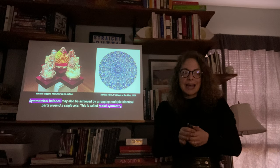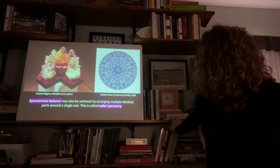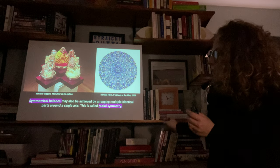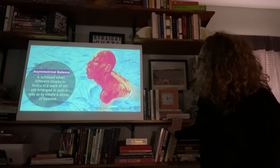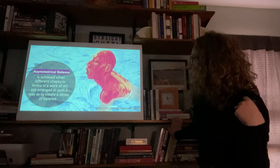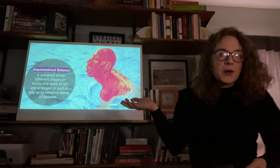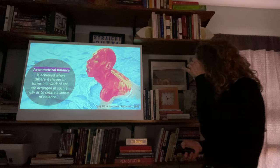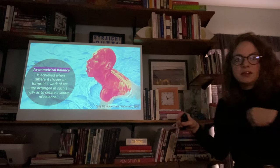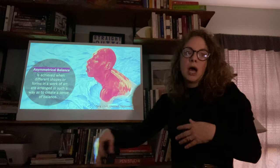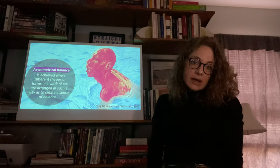And over here we have Damien Hirst, who does a butterfly mandala — butterfly wings repeated in a mandala arrangement. Then we have asymmetrical balance, which is achieved when different shapes or forms are arranged in such a way as to create a sense of balance. This work by Feng Lijun, 'Untitled Swimmer,' adds a lot of visual interest — having just one person on one side with the blank space of water as balance, and the fact that the orange and the blue are complementary colors.